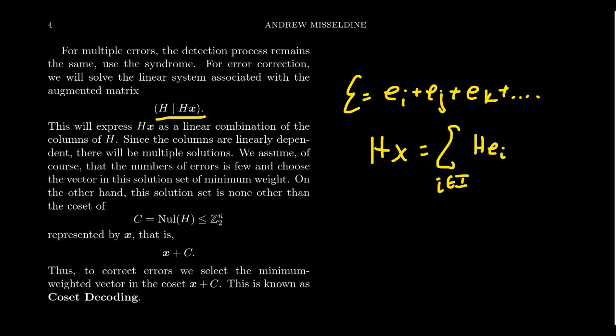So solving this linear system here, this will express H of X as a linear combination of the columns of H. Since the columns are linearly dependent, there will be multiple solutions. We do expect some dependence relationships on our matrix H. We need some.